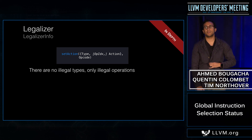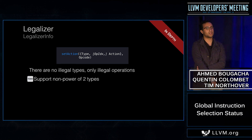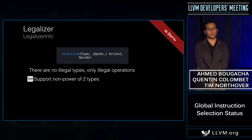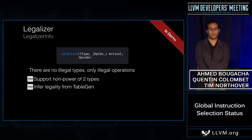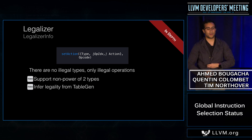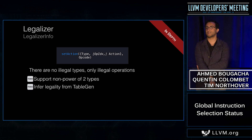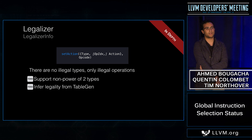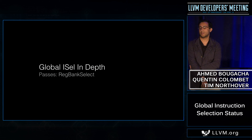There are other interesting details about legalization. We don't support non-power-of-two types yet, and we expect that will force us to change this API. We also eventually want to infer legality from TableGen — from existing TableGen information we can see that if a pattern exists, it's selectable, and by definition everything selectable is legal. That's it for the legalizer; let's move on to RegBankSelect.